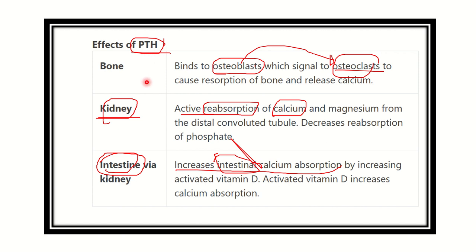So acting on bone is not the best way for parathyroid hormone to increase serum calcium without harm to the body. The second pathway, the kidney, absorbs most of the calcium and magnesium and excretes phosphate. The third option, through the intestine, is an indirect pathway where parathyroid hormone increases absorption of dietary calcium.